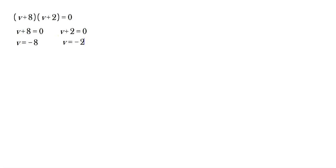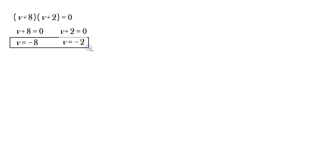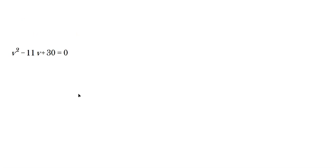These are your answers — both of them, not just one, not just the other. These are your answers right here. This is one of the most direct and simplest kinds because it's already factored, so you set the factors equal to 0.